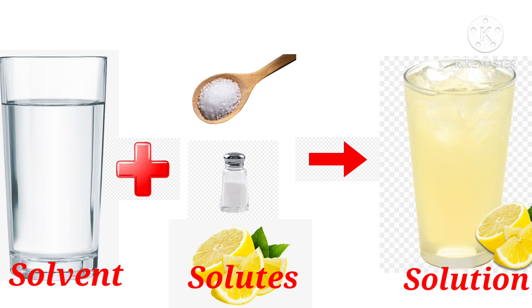So children, we have learnt about three things: solution, solute and solvent. What is a solution? When a substance dissolves completely in any medium, we get a solution. What is a solute? The substance that gets dissolved in a medium to form a solution is the solute. And the medium in which the substance is dissolved is called the solvent.